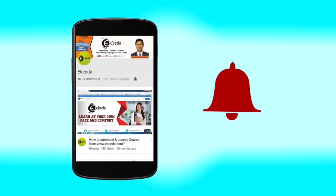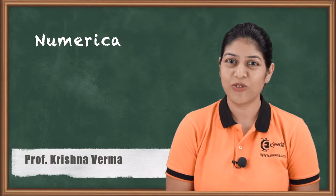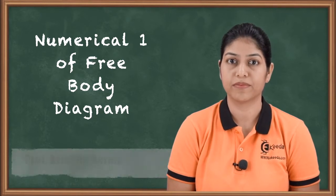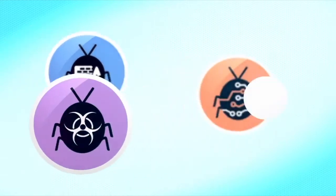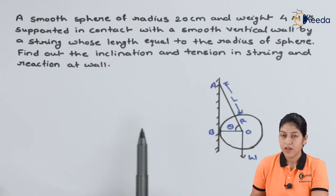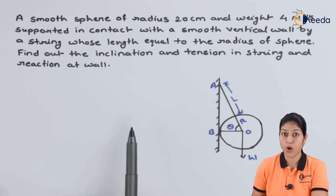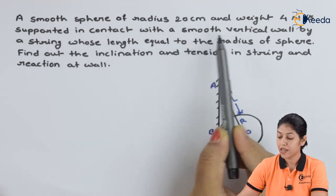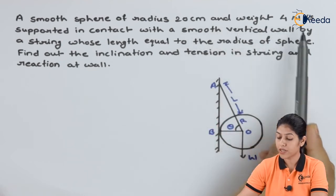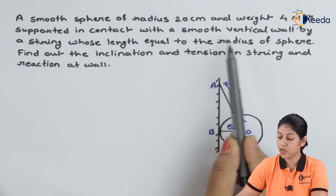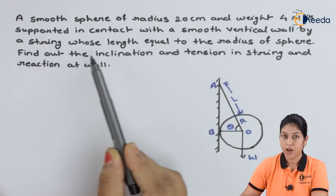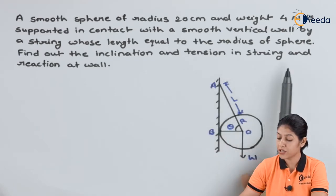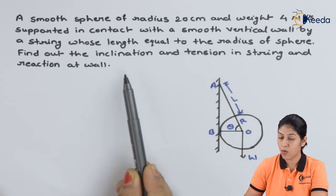Click the bell icon to get the latest videos from Ikeda. Hello friends, in this video I am going to discuss about one numerical related to concepts of free body diagram. The numerical is: a smooth sphere of radius 20 centimeter and weight 4 Newton is supported in contact with a smooth vertical wall by a string whose length equals to the radius of the sphere. Find out the inclination and tension in the string and reaction at the wall.